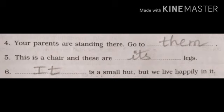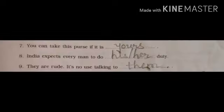Number five: this is a chair and these are dash legs. Here in this sentence, chair is a non-living thing, so for that we are using 'its'. The answer is: this is a chair and these are its legs. Number six: it is a small heart but we live happily in it. Heart is a non-living thing, so for non-living things the answer is 'it'.